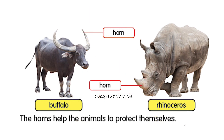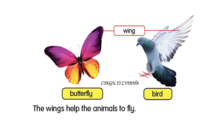Here, we have buffalo and rhinoceros. Both have horns. What is the function of having horns? The horns help the animal to protect themselves from danger. How about butterfly and bird? Both have wings. The wings help the animal to fly.